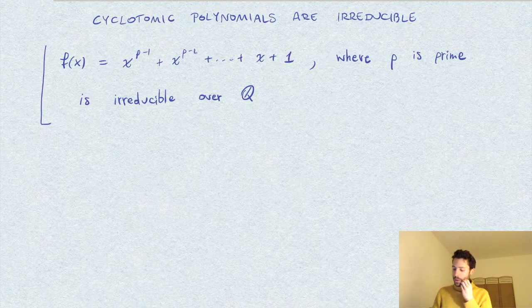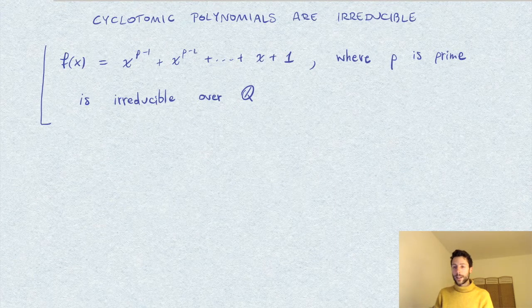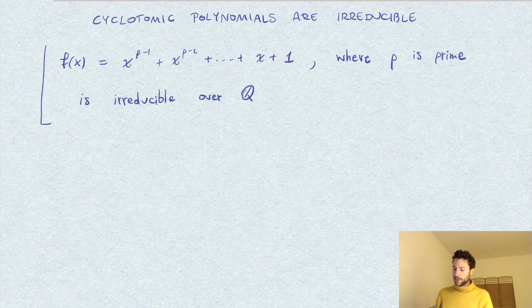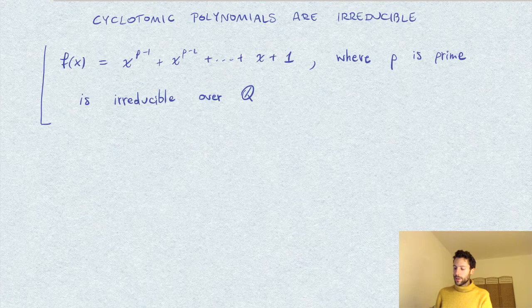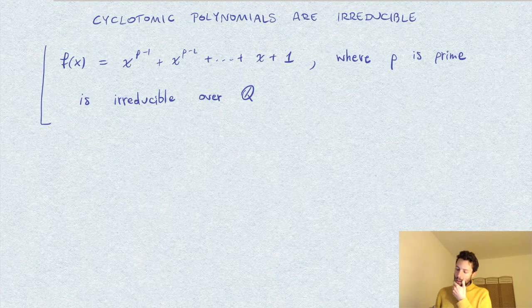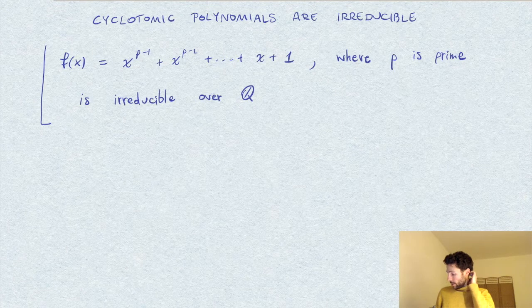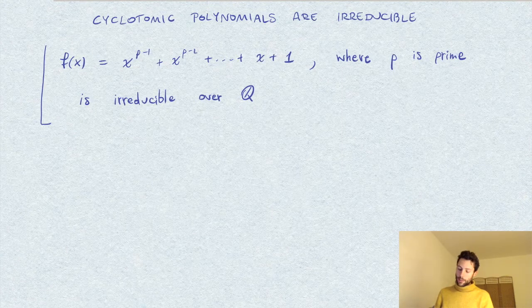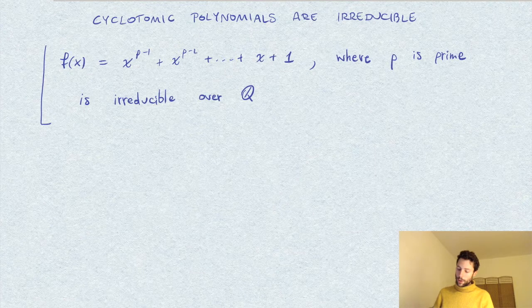But we want to solve this by applying Eisenstein criterion for irreducibility. And of course we cannot do this directly because this polynomial with the constant term equals to 1 cannot satisfy Eisenstein criterion.